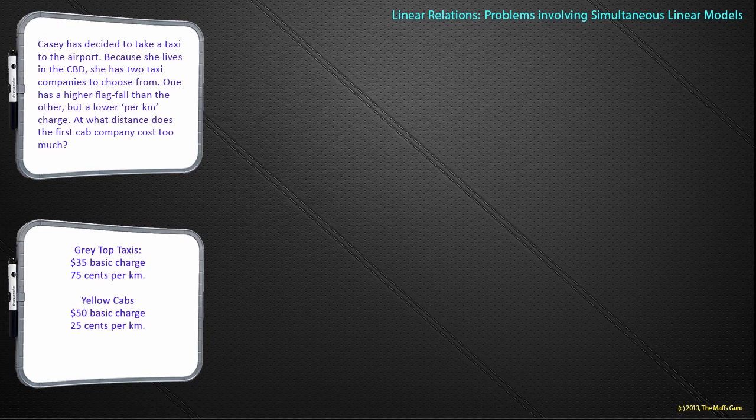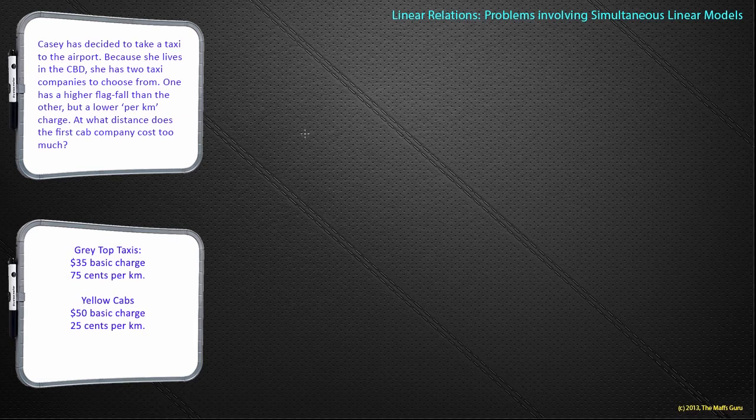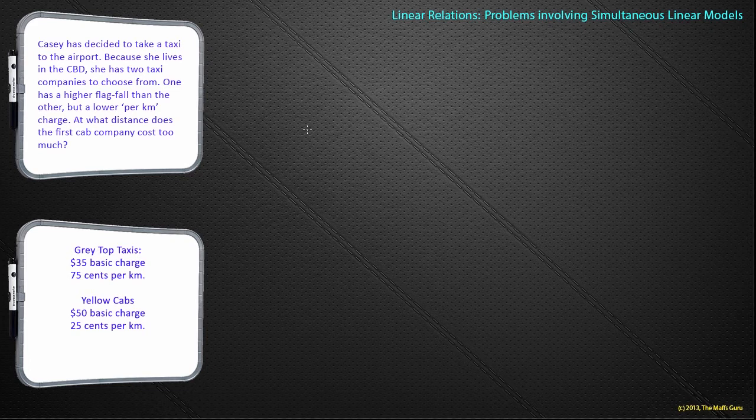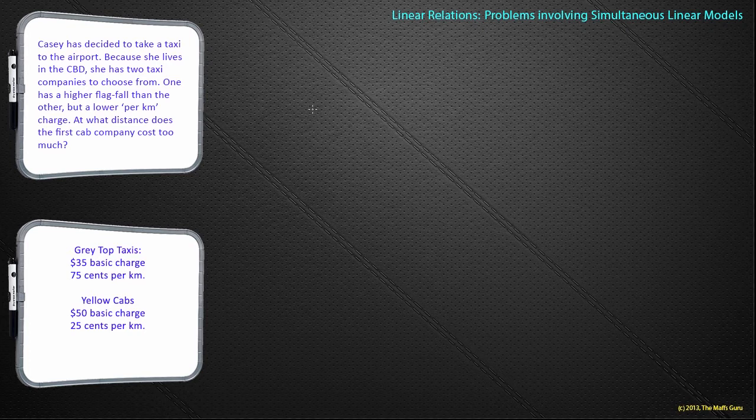At what distance does the first cab company cost too much? If we look at the bottom, we can see the Grey Top Taxes are a $35 basic charge, that's the flag fall, and 75 cents per-kilometre. And the Yellow Cabs are a $50 basic charge and 25 cents per-kilometre. Okay, so we've got two totally different cab companies.